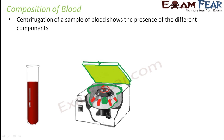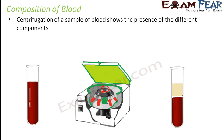When the centrifuge moves at such high speeds, the denser components in the blood tend to move away from the center, and the lighter components stay near to the center. So the denser components move outward and the lighter components move towards the center as it spins in a circular path.